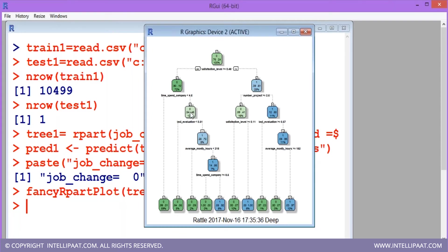Then it checks the last evaluation, then average monthly hours. And finally, it comes down here. This is how in multiple steps you can see through this process, this person has decided to stay with the company. This is how I wanted to display what is meant by machine learning.